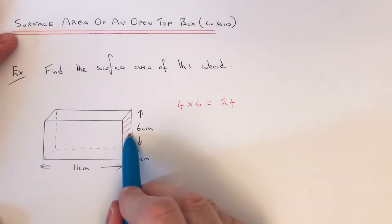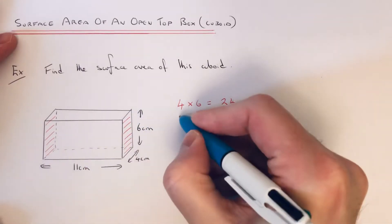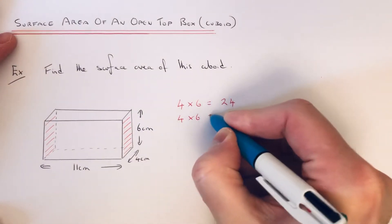So this rectangle on the right is the same as the one on the left, so we have another 4 by 6 rectangle.